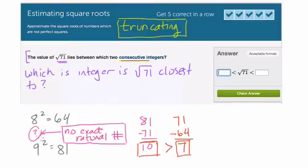So the difference between 8 squared and the square root of 71 is less than the difference between 71 and the square root of 81. So it's somewhere between the square root of 81 and the square root of 64, but it's closer to the square root of 64.